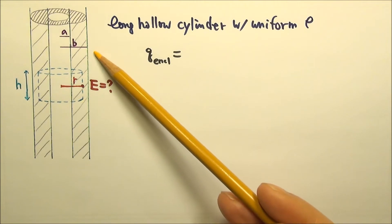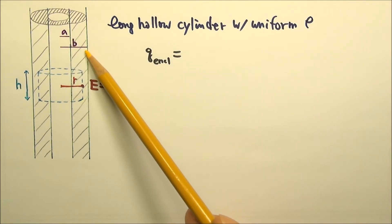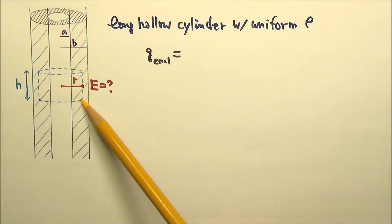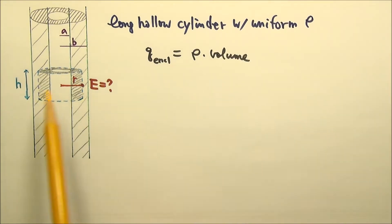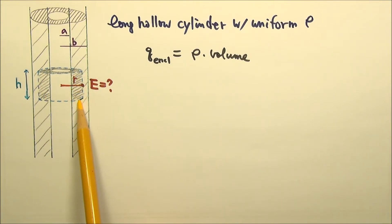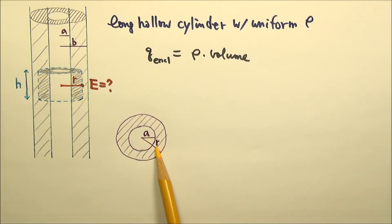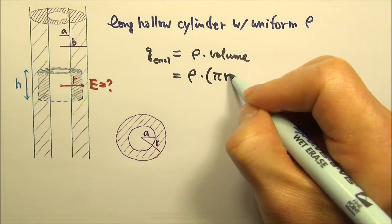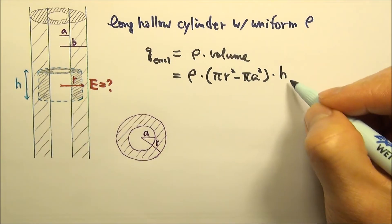For example, we have a long hollow cylinder with a uniform volume charge density rho. The inner radius is a and the outer radius is b. To find the electric field inside, we make a cylindrical Gaussian surface. To find q-enclosed, we multiply rho by volume — the volume that contains charges and is inside the Gaussian surface. The base is a ring with inner radius a and outer radius r, so q-enclosed is rho times (pi r² minus pi a²) times the height h.